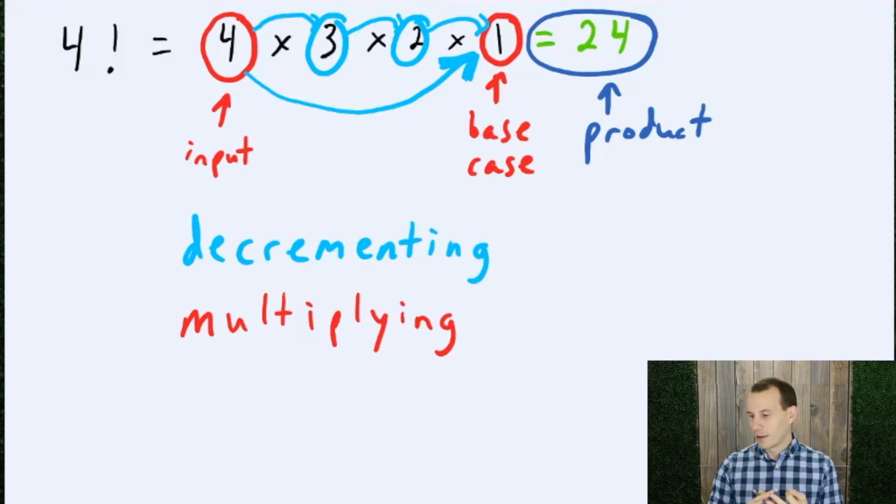And now, what about this product that we're building up? Where should we put that? How should we handle that? Well, we should probably go ahead and store this product as a second parameter.